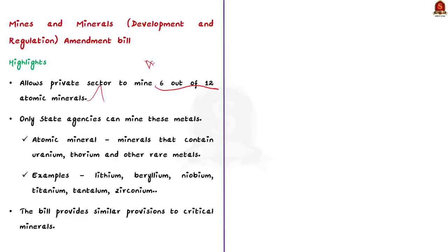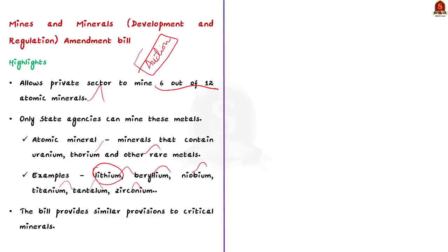Atomic minerals are minerals that contain uranium, thorium, and other rare metals — for example, lithium, beryllium, niobium, titanium, tantalum, zirconium, etc. Previously, lithium was classified as an atomic mineral, meaning it could only be mined by state-owned companies. The new amendment act removes lithium from this list so that private companies can mine it. The bill also provides similar provisions for critical minerals, which are essential to the economy and whose supply may be disrupted. The Ministry of Mines has identified 30 critical minerals for India, and the list will be periodically updated.